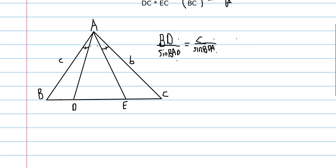So we have BE, if we look at triangle ABE, we have that BE divided by sine of BAE